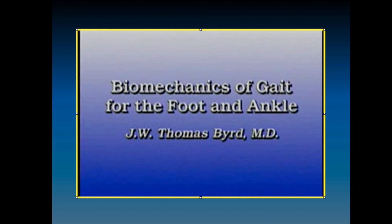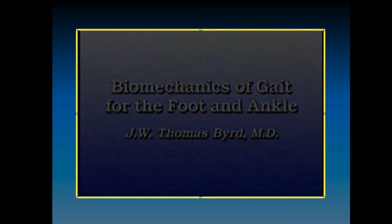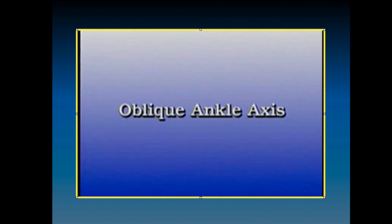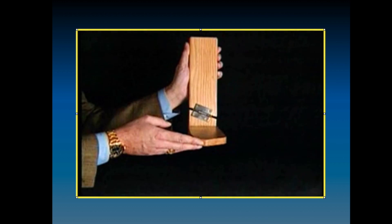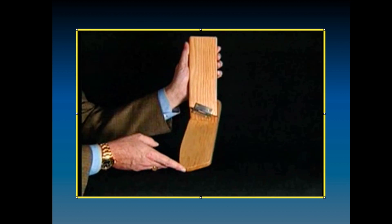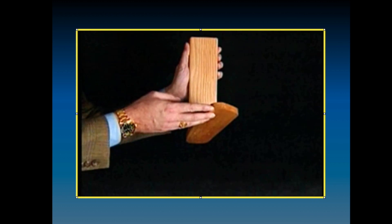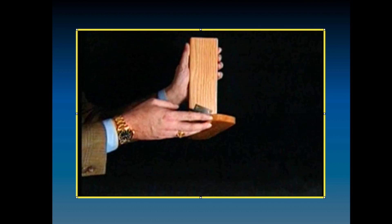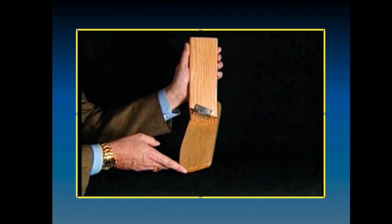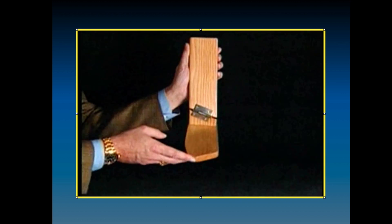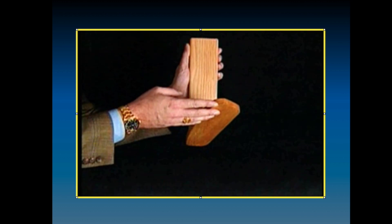Knowledge of the biomechanics of the foot and ankle is paramount to understanding the kinematics of the human locomotor system. The ankle axis is obliquely oriented in the coronal plane such that plantar flexion results in inward deviation of the foot, while dorsiflexion results in outward deviation. This oblique orientation allows horizontal rotation to occur between the foot and leg with ankle movement.